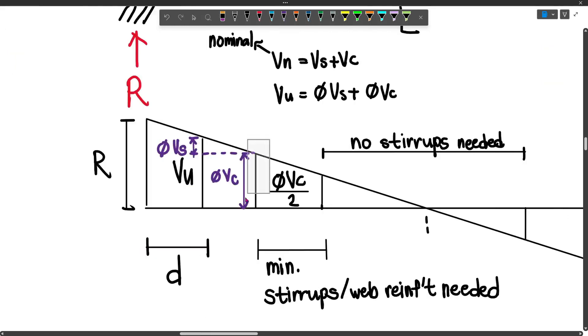However, for VU it's factored now. So VU equals phi VS plus phi VC. I'm noting this because it's important for our calculations later. To get VS, we just subtract VU and phi VC.